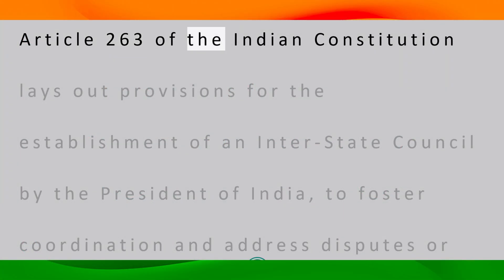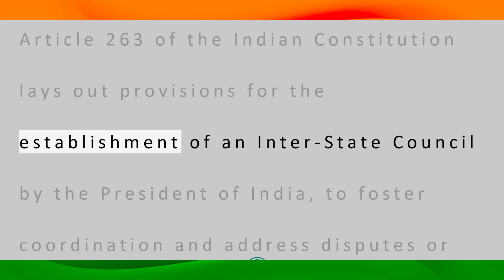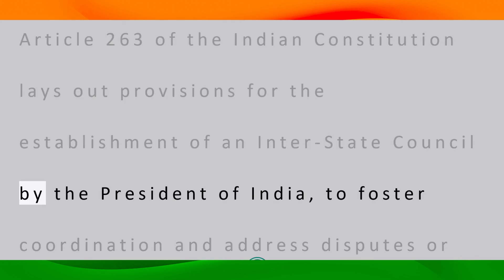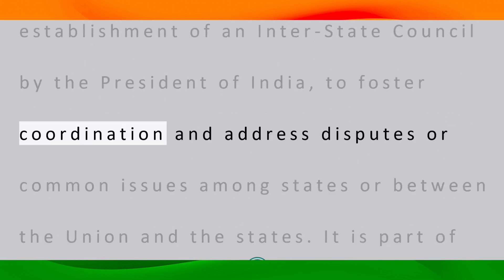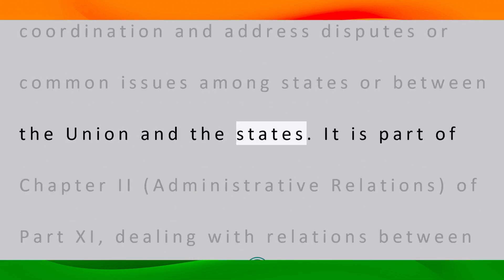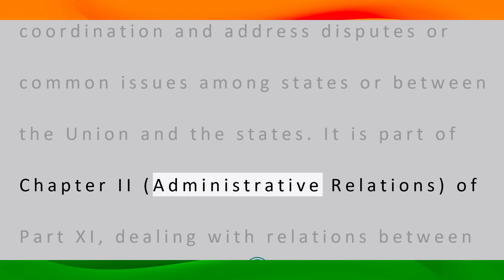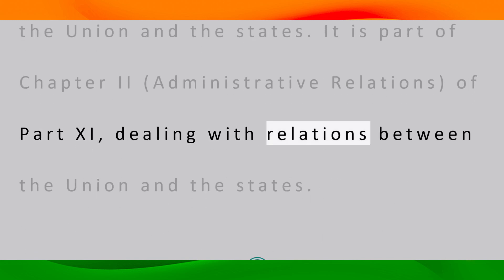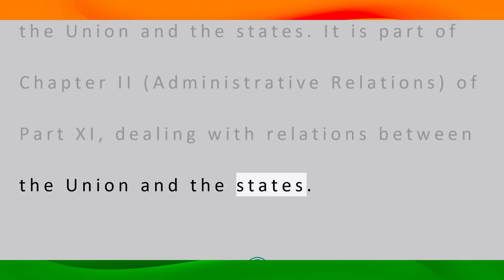Article 263 of the Indian Constitution lays out provisions for the establishment of an Interstate Council by the President of India to foster coordination and address disputes or common issues among states or between the union and the states. It is part of Chapter 2, Administrative Relations, of Part 11, dealing with relations between the union and the states.